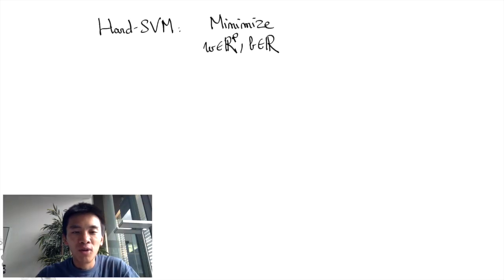Let's start by recalling the optimization program that computes hard SVM. We want to minimize over W and B the norm of W squared, subject to YI times W transpose XI plus B greater than 1.